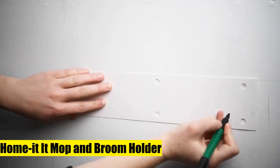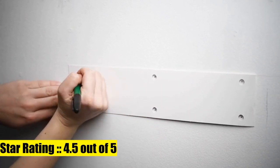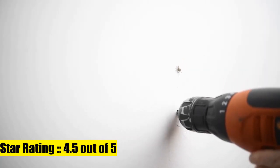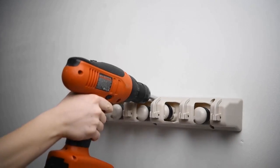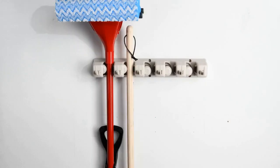One Home Edit mop and broom holder: five positions with six hooks, garage storage holds up to 11 tools. Superior quality tool rack holds mops, brooms, or sports equipment. Storage and organization for the home with plastic construction.